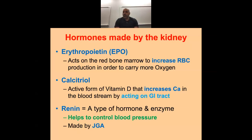Lance Armstrong got caught injecting EPO — that was the first time. The second time he was pulling his own blood and pumping it back into himself right before an event — that's blood doping. Interestingly, you cannot give EPO to Jehovah's Witnesses because it contains blood products, and they'll decline it. However, you can give it to a Jehovah's Witness minor, since you cannot withhold life-saving measures from a child.